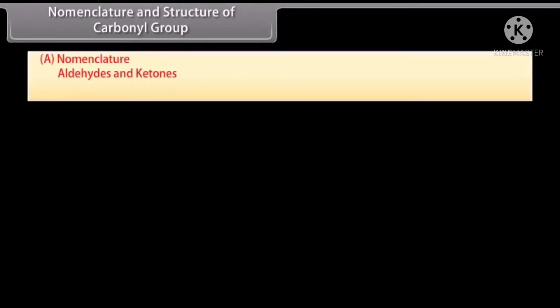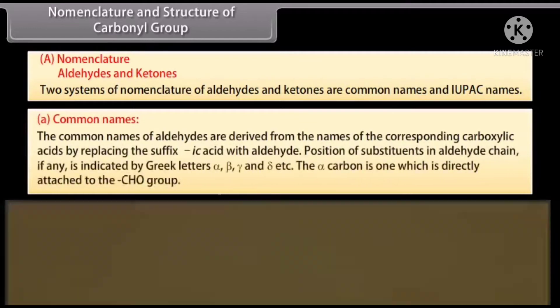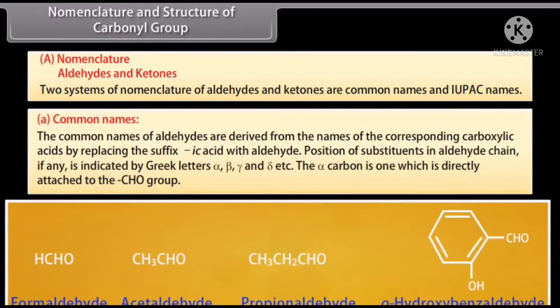Two systems of nomenclature of aldehydes and ketones are common names and IUPAC names. The common names of aldehydes are derived from the names of the corresponding carboxylic acids by replacing the suffix '-ic acid' with '-aldehyde'. Position of substituents in the aldehyde chain, if any, is indicated by Greek letters alpha, beta, gamma, and delta, etc.